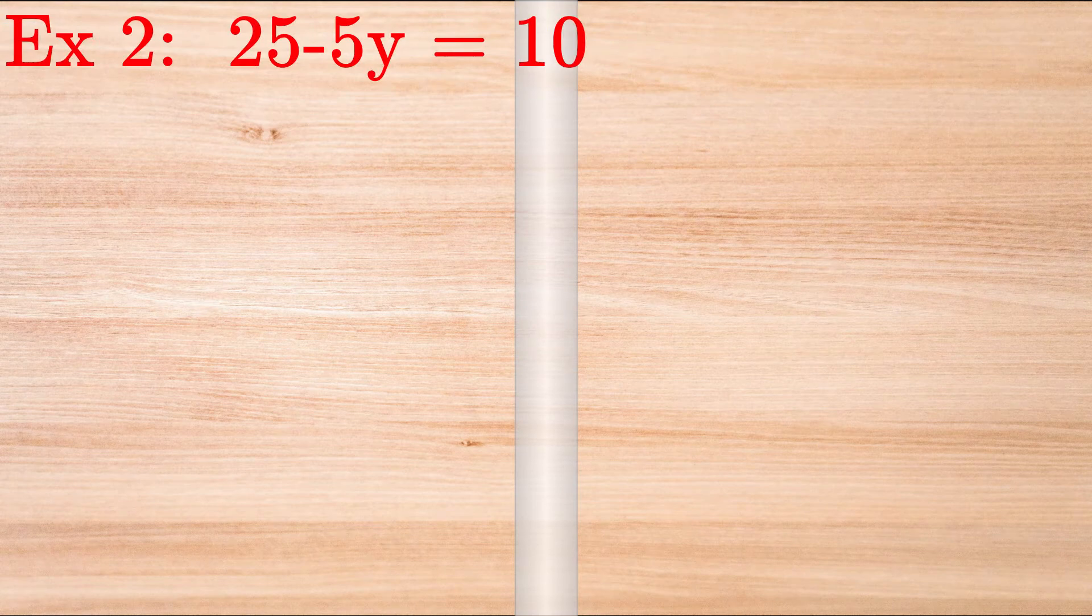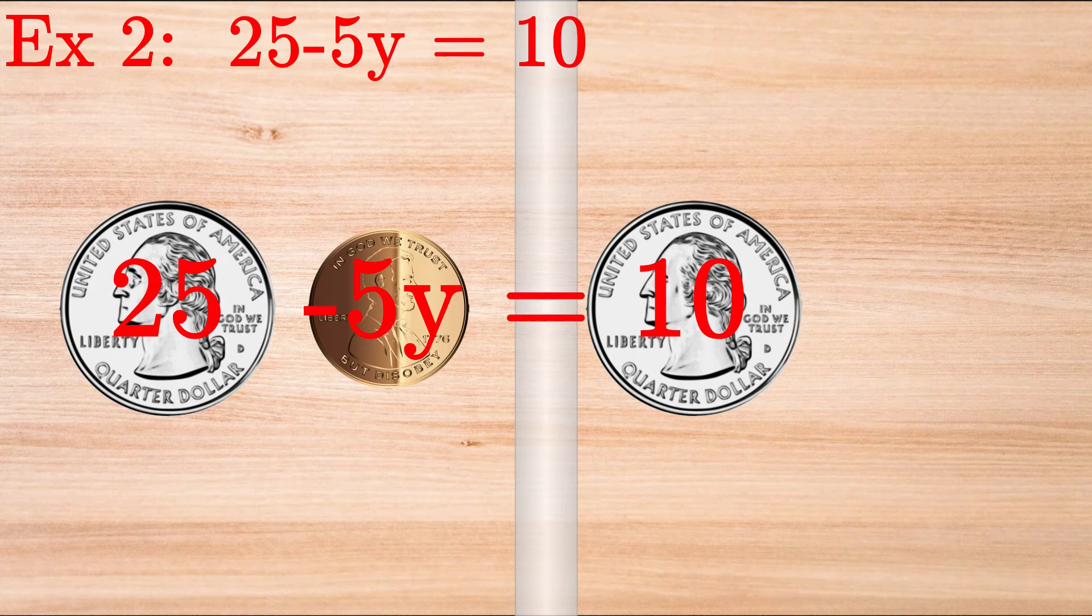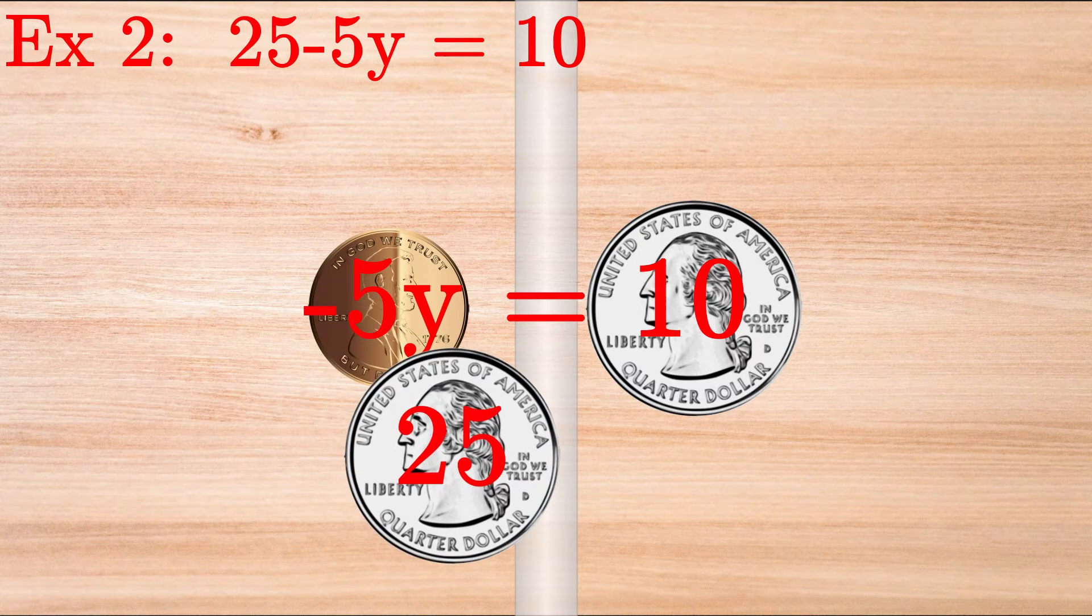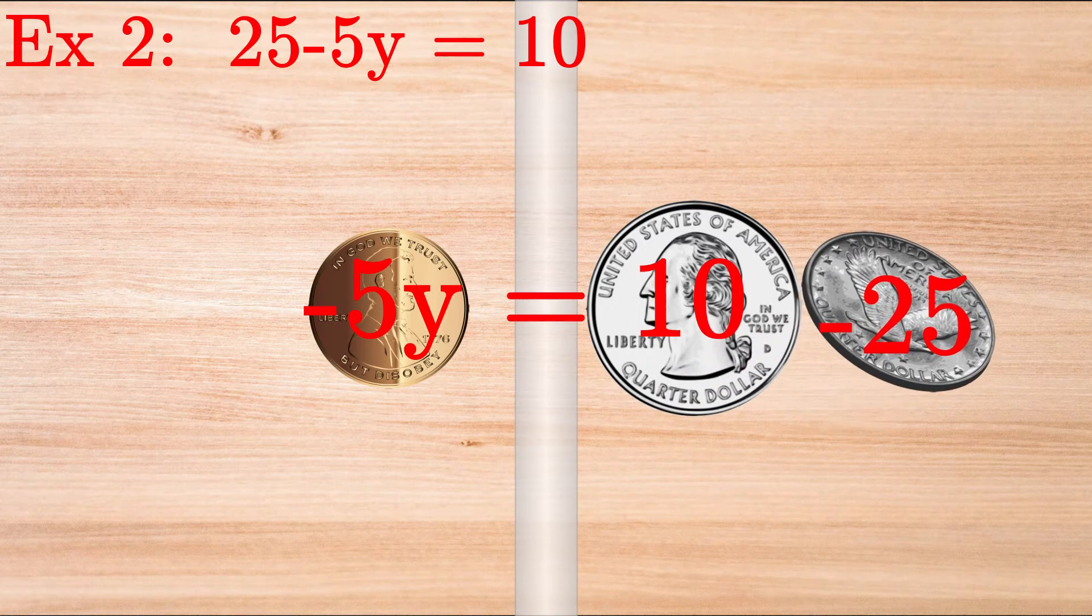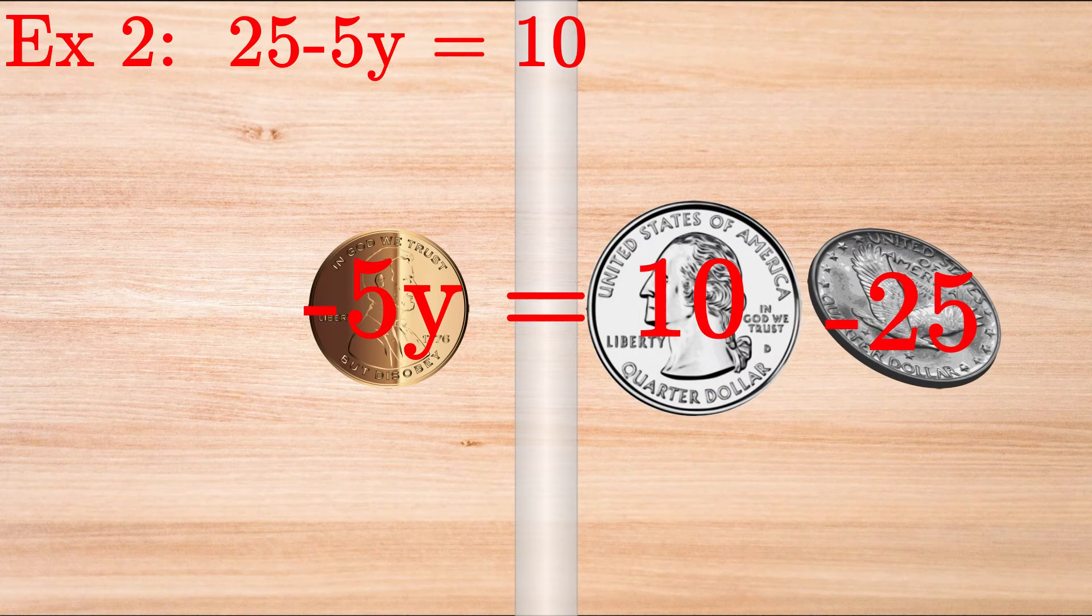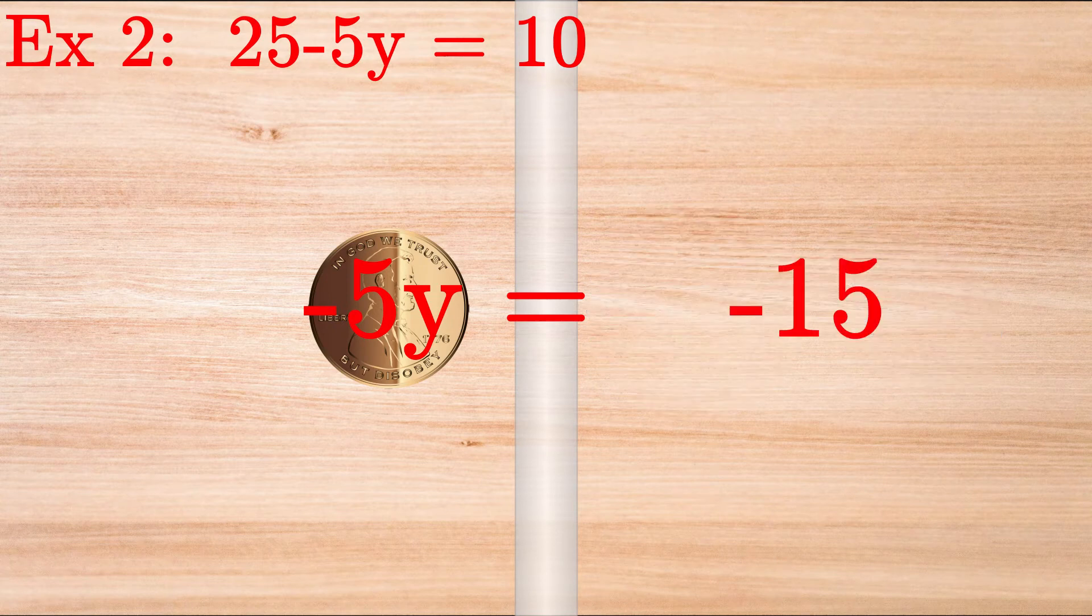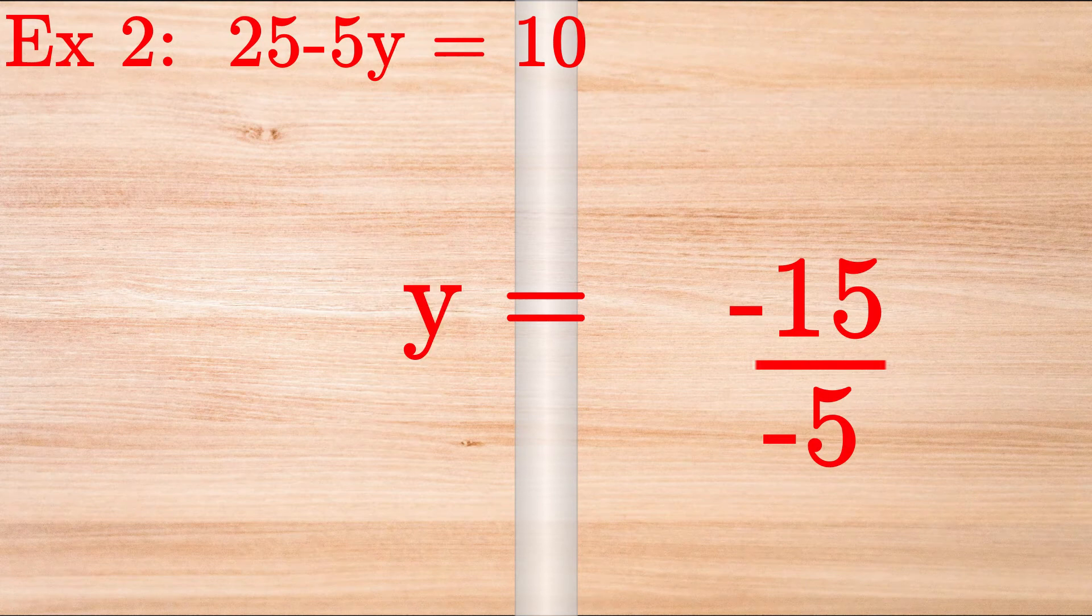Solve for Y if 25 minus 5Y equals 10. We want the minus 5Y coin all by itself. So we slide the 25 coin to the right-hand side and flip it to negative 25. We find that negative 5Y equals 10 minus 25, which is equal to negative 15. In dividing by negative 5, we get Y equals 3.